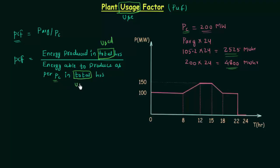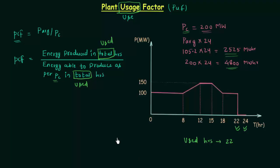In this load curve you can see the plant is not operational from 22 hours to 24 hours — the power is equal to 0. So used hours is 22 and total hours is 24. Let's calculate the plant usage factor for this particular load curve.